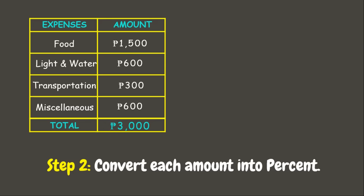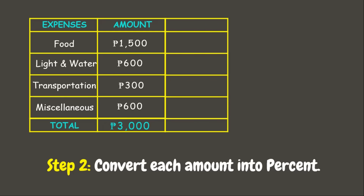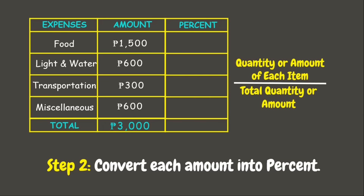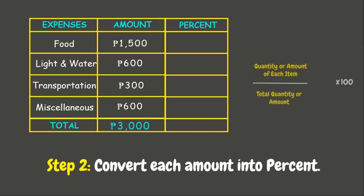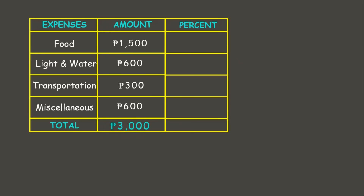Now let's add another column for the percent. To convert each amount into percent, we need to divide the amount of each item by the total amount and multiply it by 100. Let's try food first — the amount spent for food is 1,500 pesos divided by the total amount of 3,000 pesos.